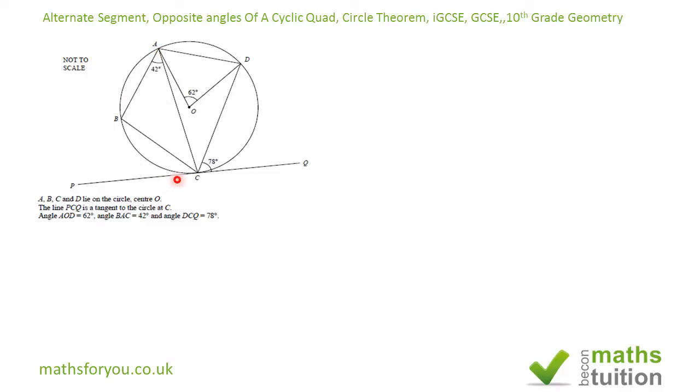A, B, C, D lie on the circle with center O over there. Angle AOD is 62 degrees, this one here at the center. Angle BAC is 42 degrees, and angle DCQ is 78 degrees. It says find angle ODA, this one here.